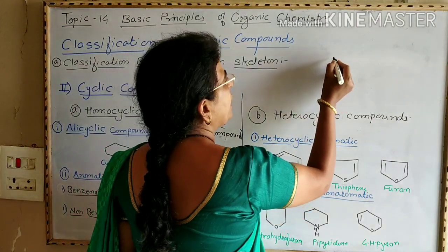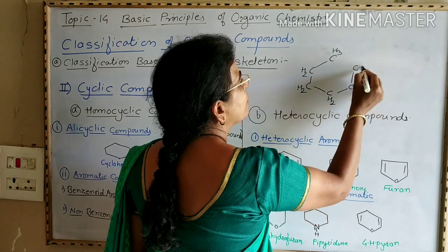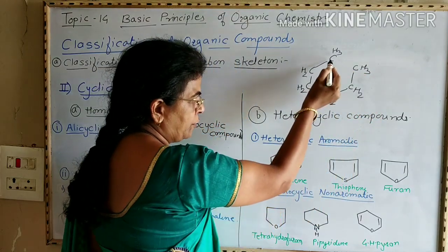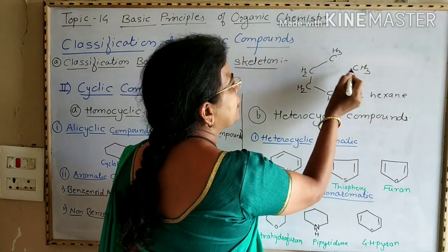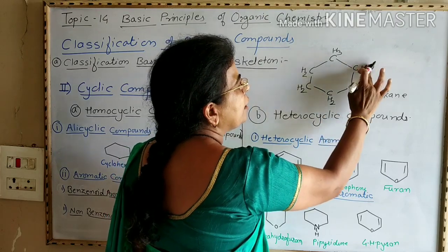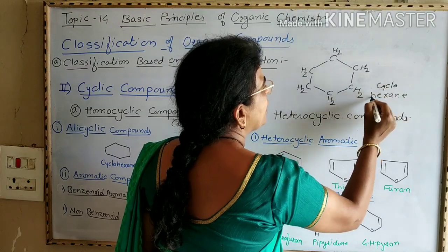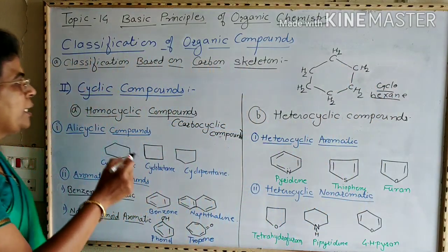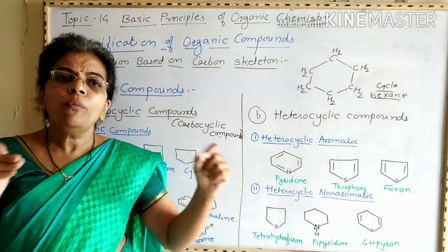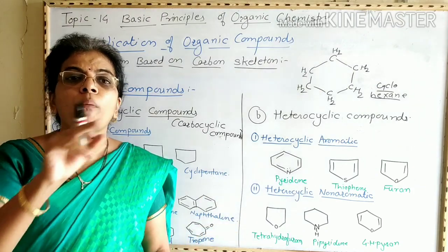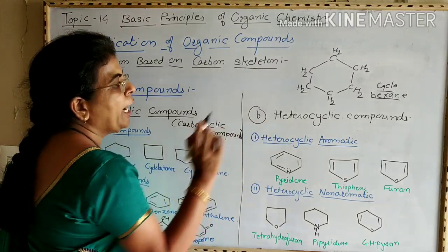For example, if we take cyclohexane — there are six carbon atoms numbered 1 through 6 connected in a ring. Therefore it is cyclohexane. Now, cyclic compounds are further classified into homocyclic compounds and heterocyclic compounds.